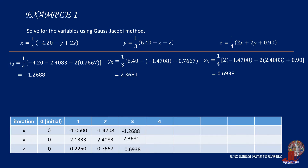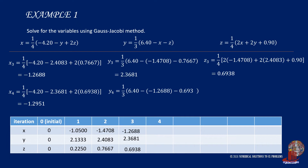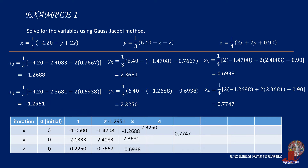The fourth iteration: x₄ is one fourth of negative 4.2 minus 2.3681 plus twice of 0.6938, giving negative 1.2951. y₄ is a third of 6.4 minus negative 1.2688 minus 0.6938, giving 2.3250. z₄ is computed as a quarter of twice of negative 1.2688 plus twice of 2.3681 plus 0.90, giving 0.7747.